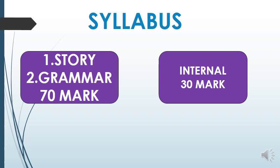The second portion is grammar. The story portion carries 40 marks and the grammar portion carries 30 marks, making a total of 70 marks for the written university examination. Internal marks are given based on your personality, assignments, and internal examinations.